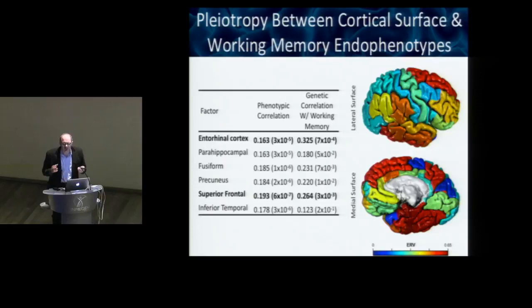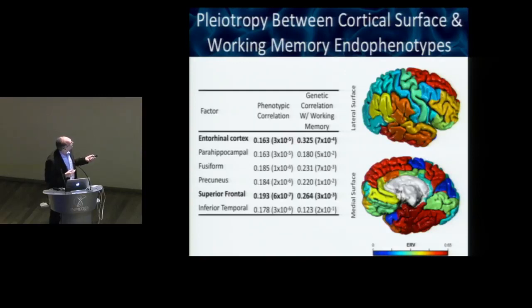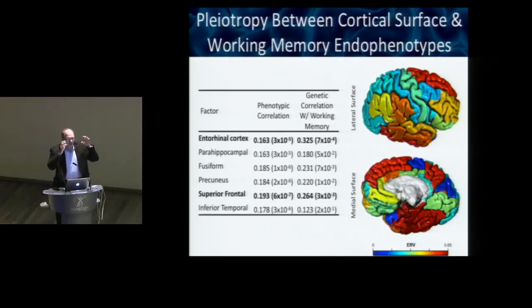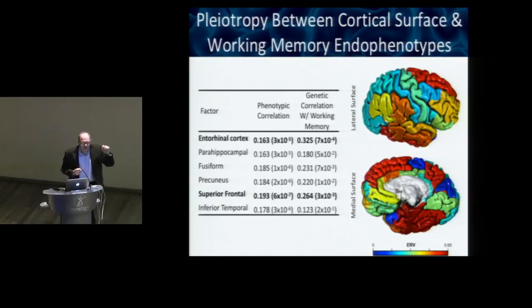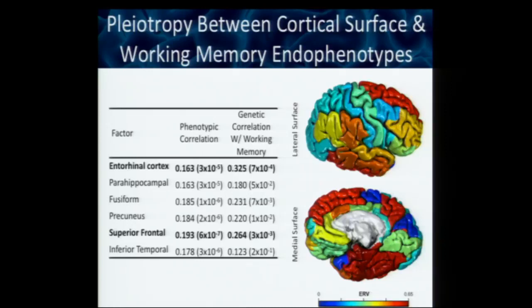Going back to the brain regions associated with schizophrenia liability, we asked: is the working memory measure associated with liability for the disorder? We found that the working memory measure was phenotypically correlated with all of the brain regions, but genetically it was only correlated with the entorhinal cortex and the superior frontal gyrus. We've shown schizophrenia is genetically associated with working memory, and that working memory is genetically associated with brain measures also associated with schizophrenia — so one genetic locus could be influencing risk for schizophrenia, working memory performance, and brain structure simultaneously.